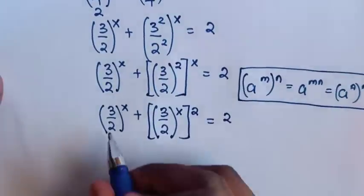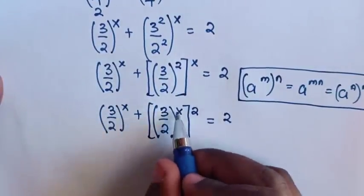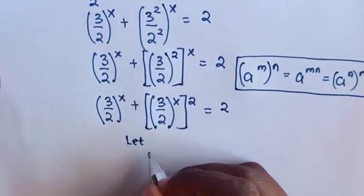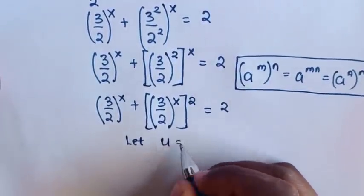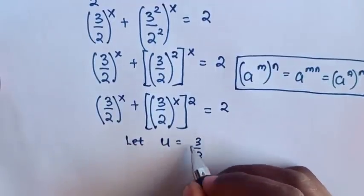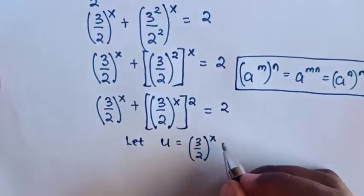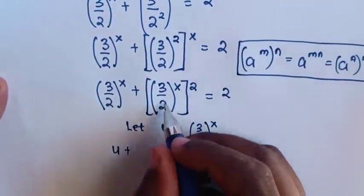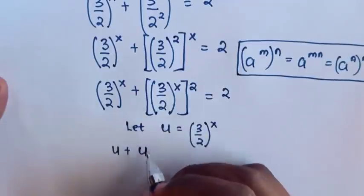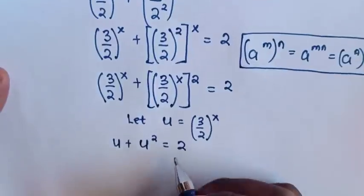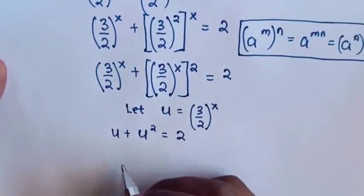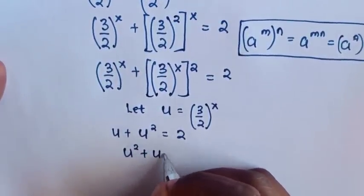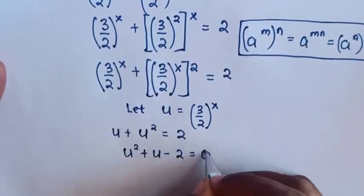In our equation, 3 over 2 bracket power of x is common. So we let u equal to 3 over 2 bracket power of x, and substitute u into the equation. So it will be u plus u power of 2 is equal to 2. We take u to the left side, giving u squared plus u minus 2 is equal to 0.